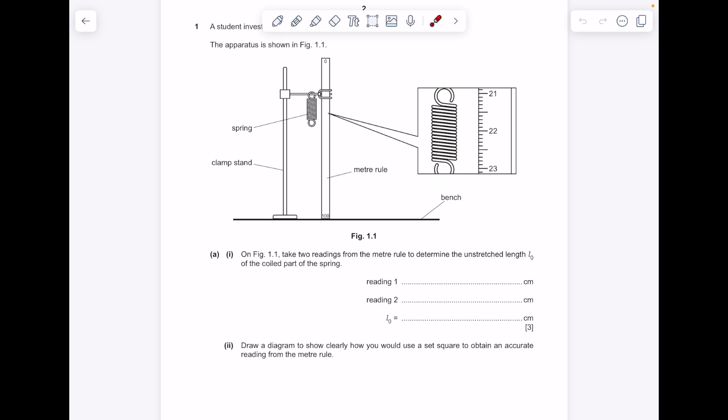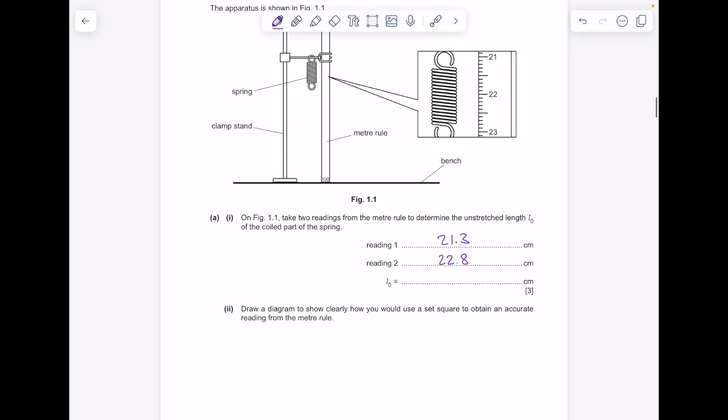So read across from here is 21.3. Reading 2, you read across from here is 22.8, and then work out the difference between those two numbers is 1.5.